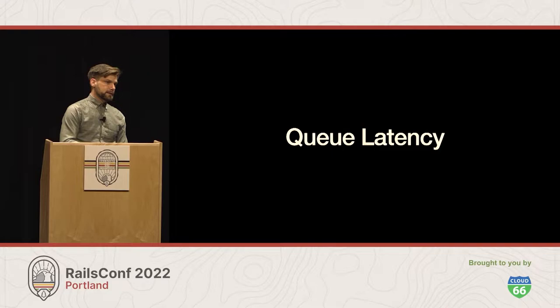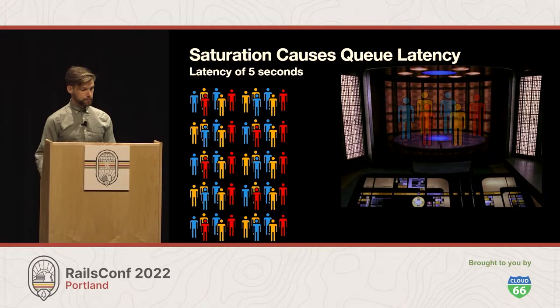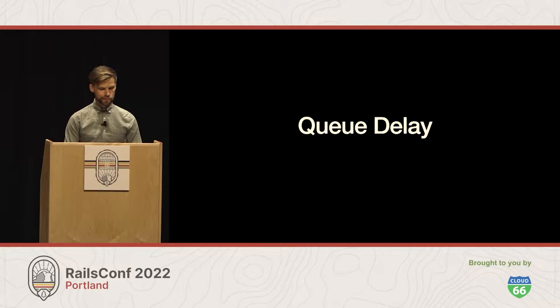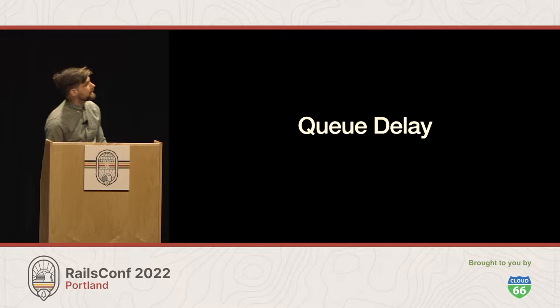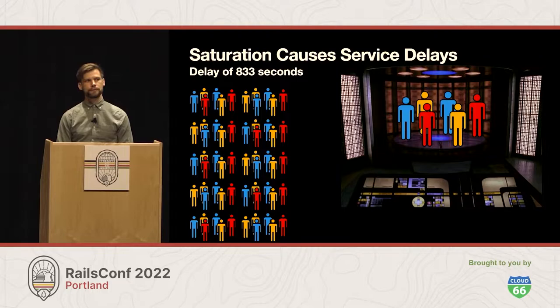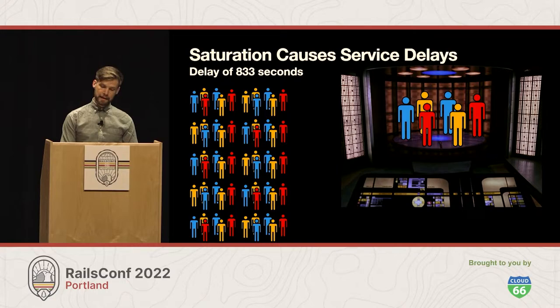Queuing latency is how long it takes to process the next job in a queue — in our case, five seconds to process a beam-out. There's also a concept of queuing delay: how long it takes to get that last transport done. If we're doing just one transporter room at a time, it's going to be 833 seconds — about 14 minutes. Our queue delay is through the roof; we're oversaturated. We're going to need to scale in order to get all of the crew members out in two minutes.